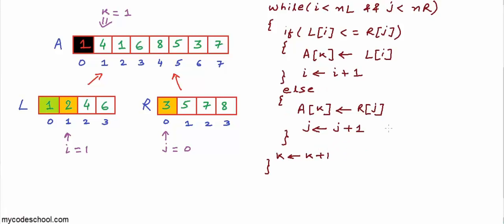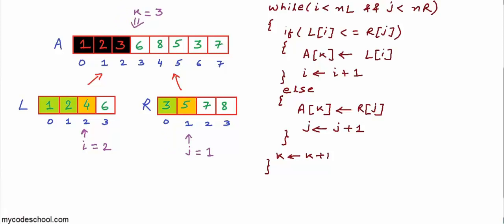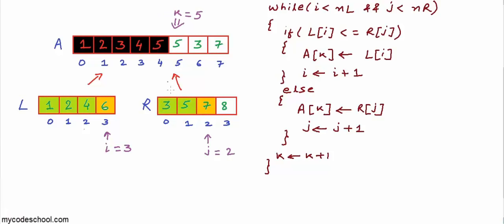Coming back to our example, i and j are both valid indices. L[i] is less than R[j], so we pick 2 for index 1 and increment both i and k. For the next position it's between 4 and 3 — 3 goes and we increment j and k. Next it's between 4 and 5, then between 5 and 6, then between 7 and 6.